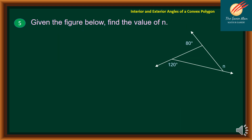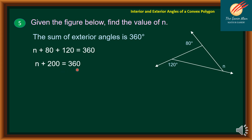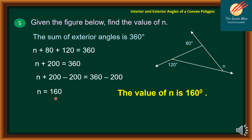Problem 5: Given the figure, find the value of N. The sum of the exterior angles is 360 degrees, so 80 plus 120 plus N equals 360. Adding the constants: N plus 200 equals 360. Subtracting 200 from both sides, N equals 160 degrees.